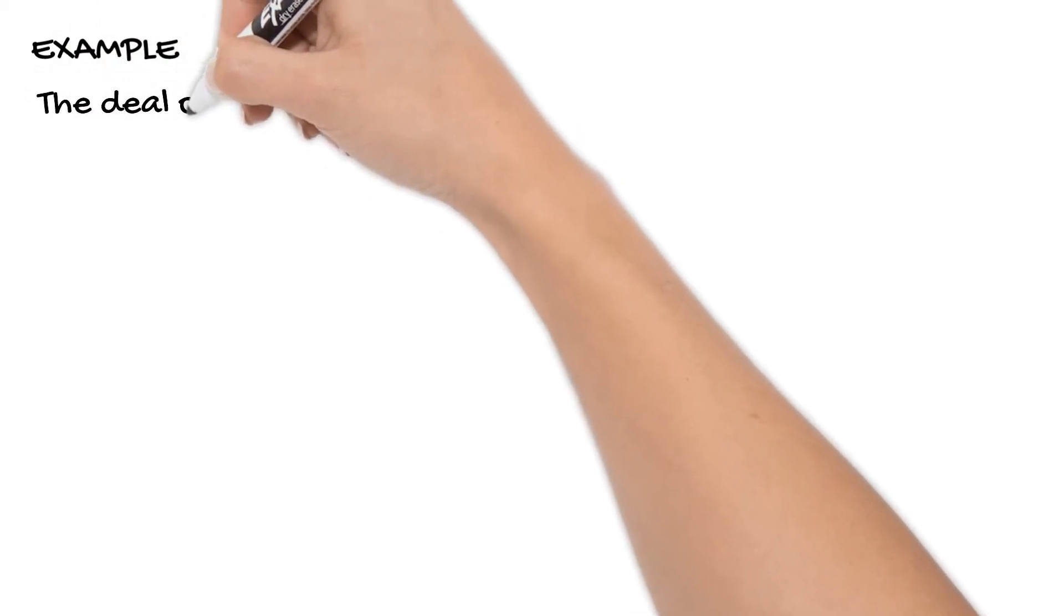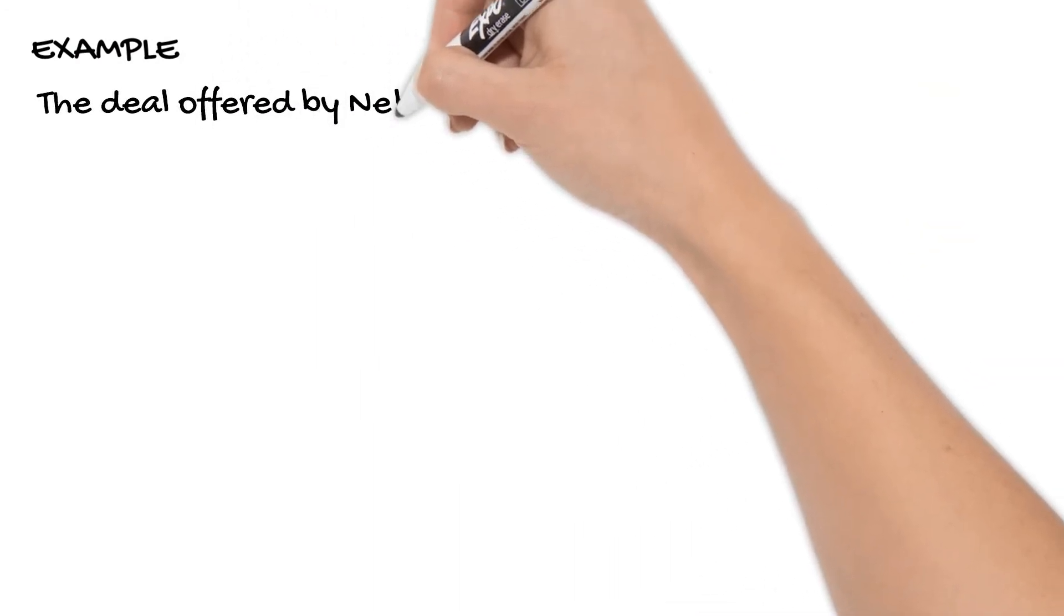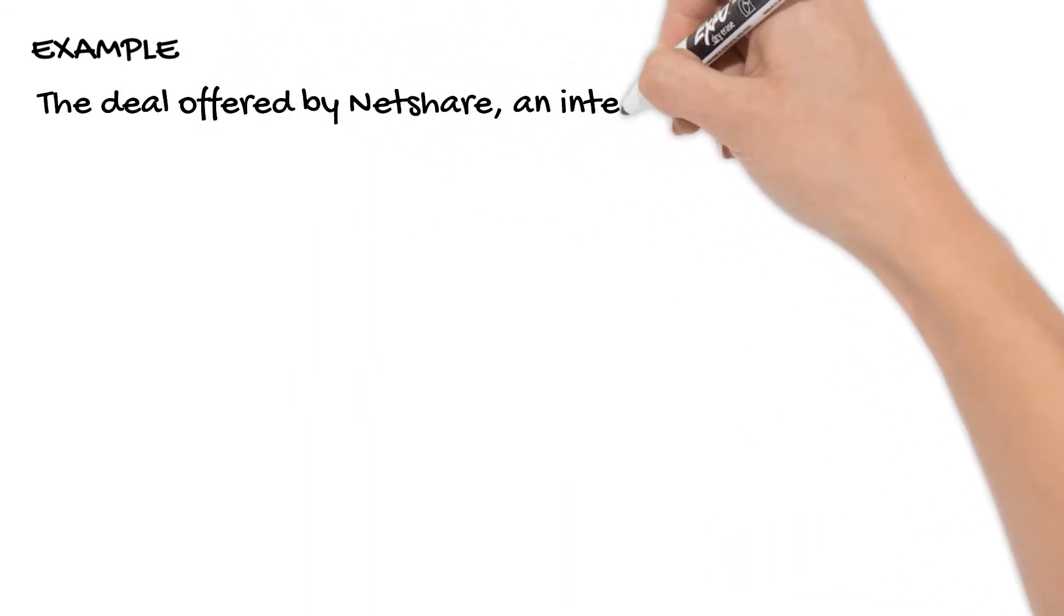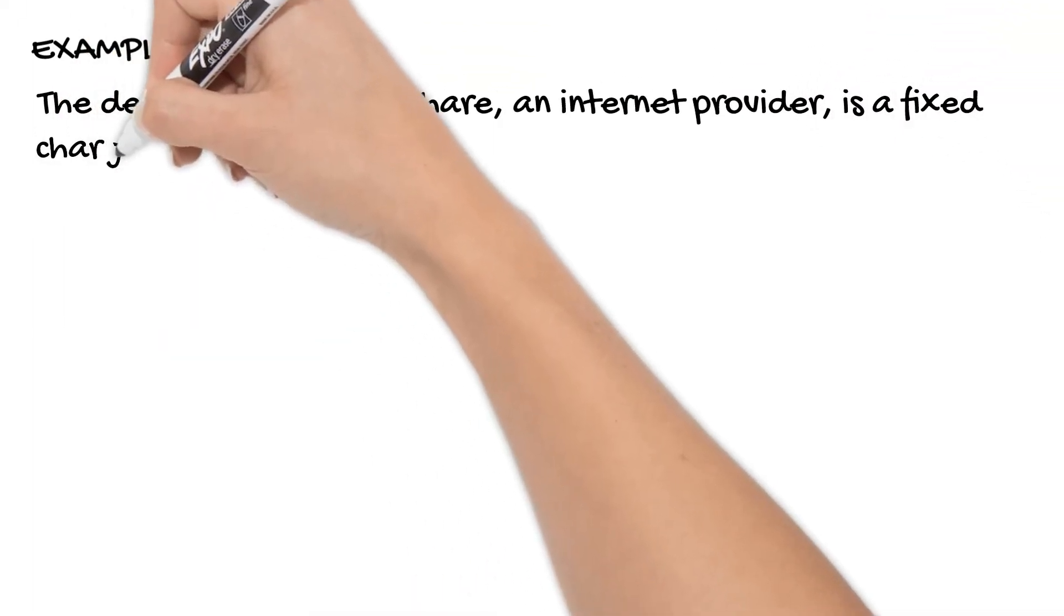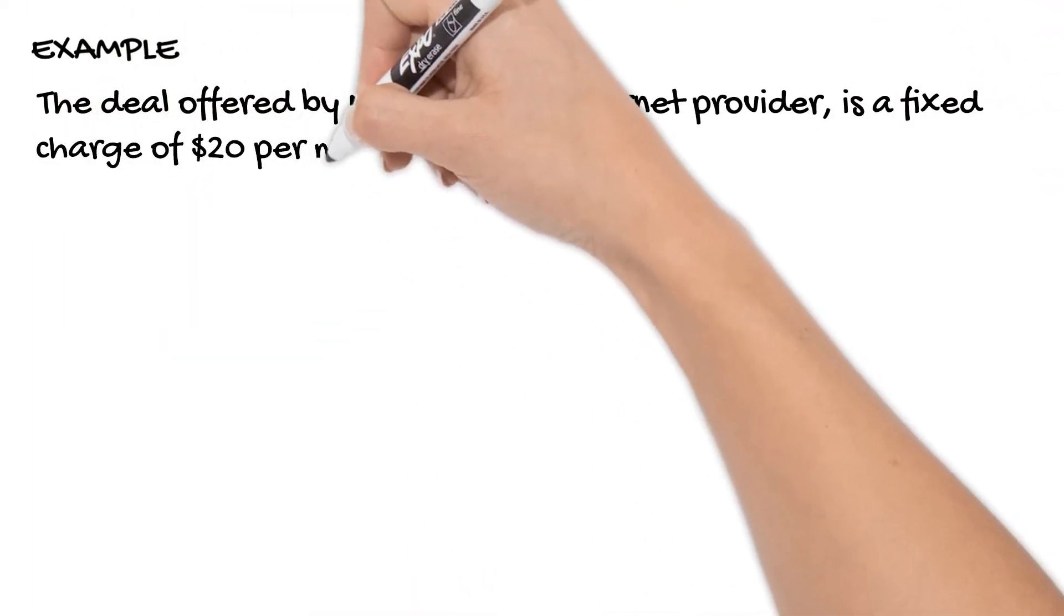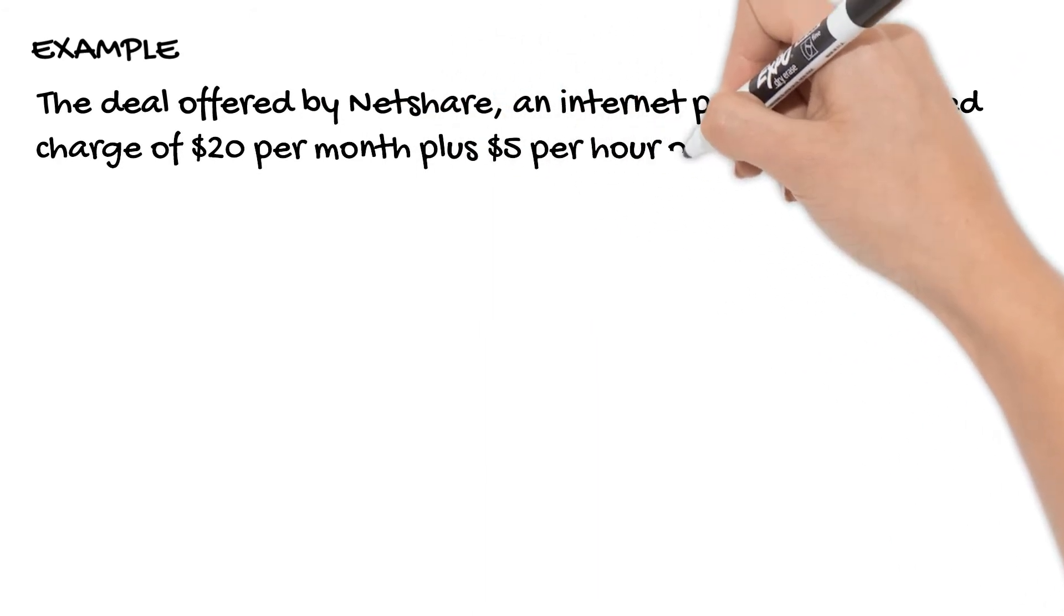Linear modeling examples will usually have multiple parts where you need to develop a rule, make a graph, and then solve problems using either the rule or the graph. Looking at our example, we've got a deal offered by NetShare, an internet provider: a fixed charge of $20 per month plus $5 for every hour of use.